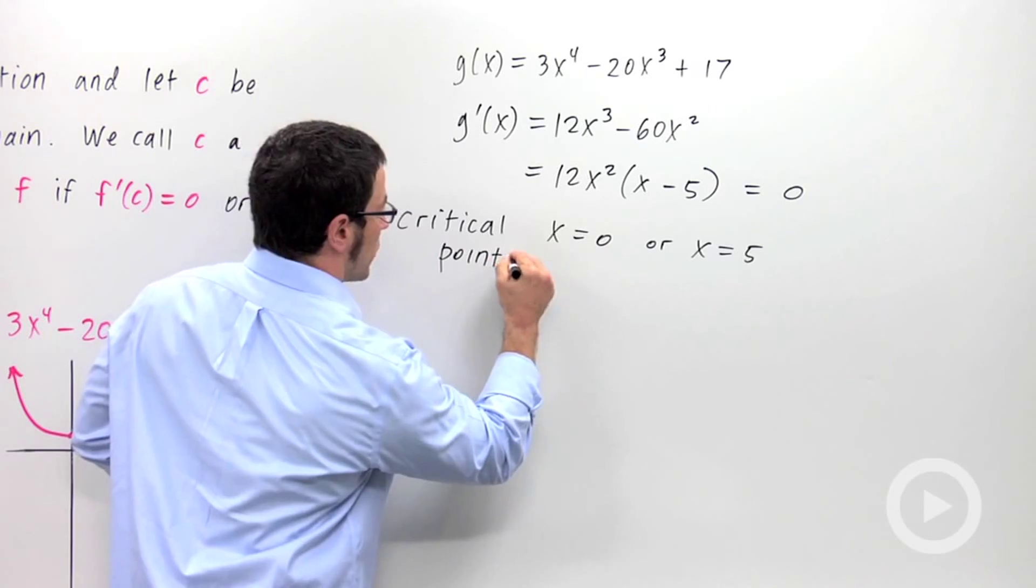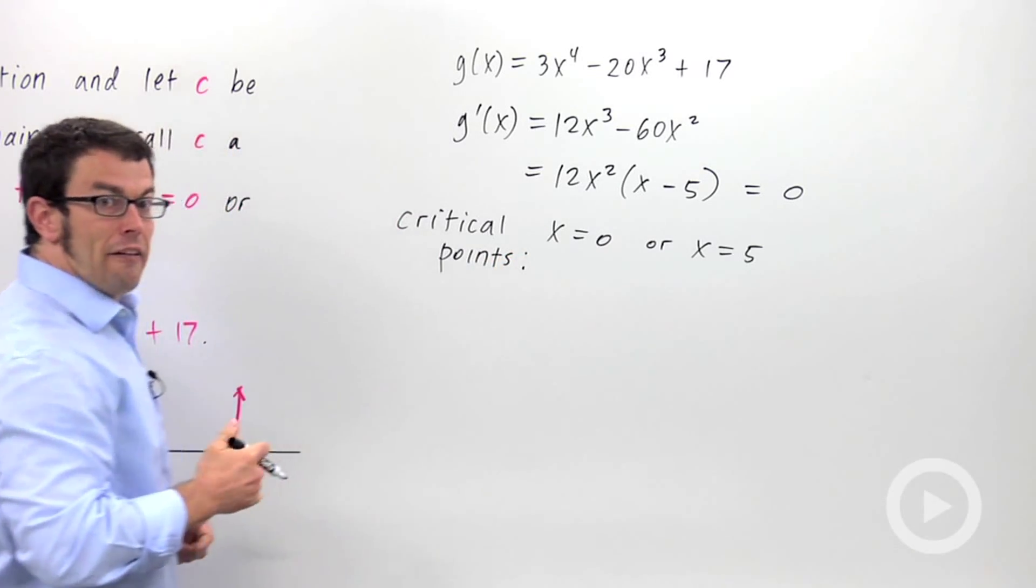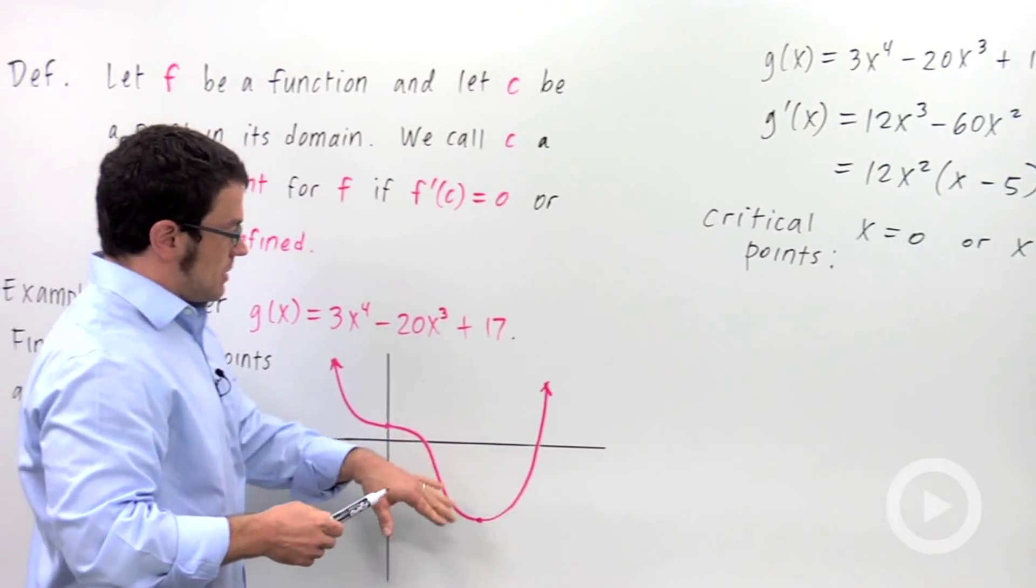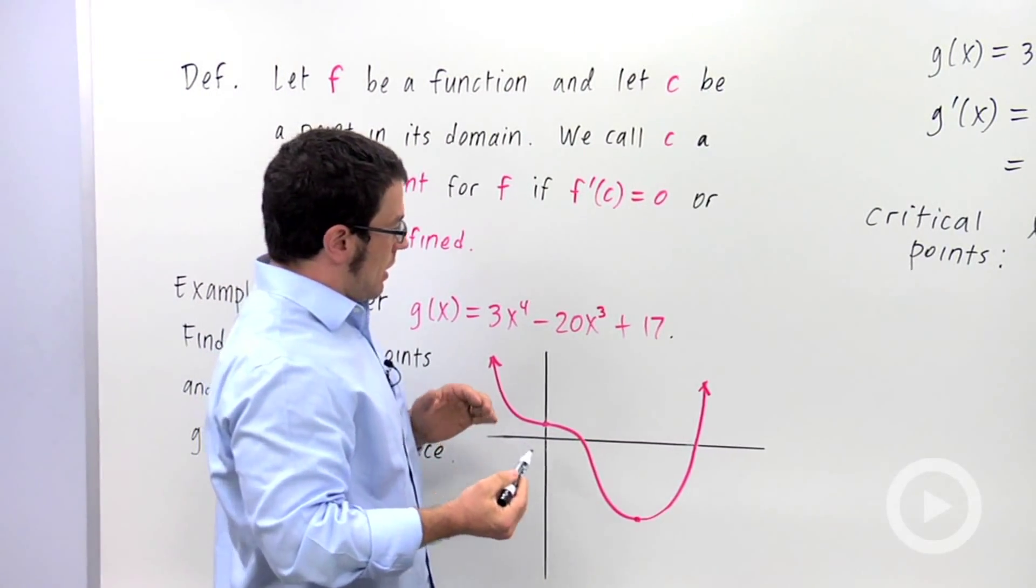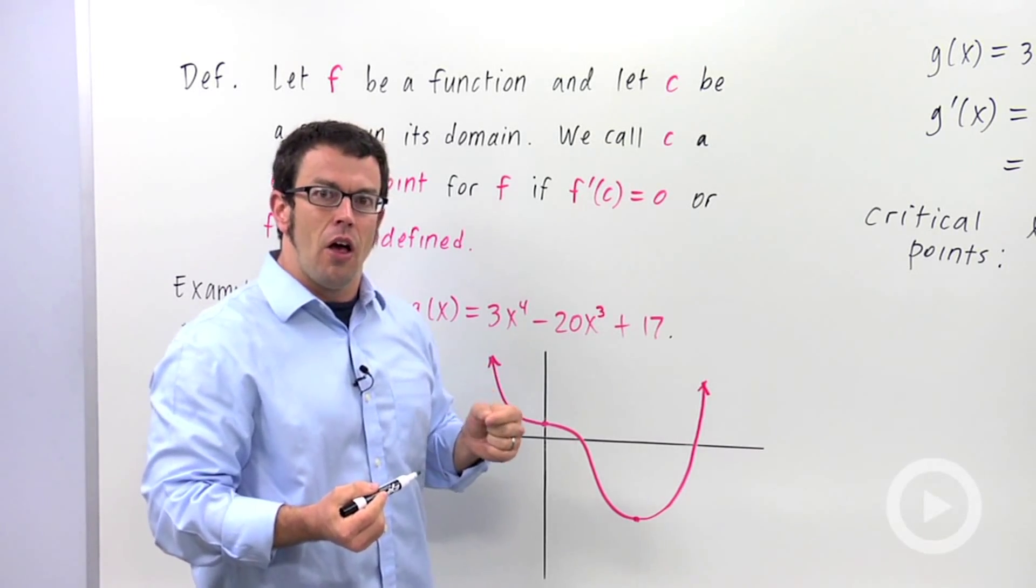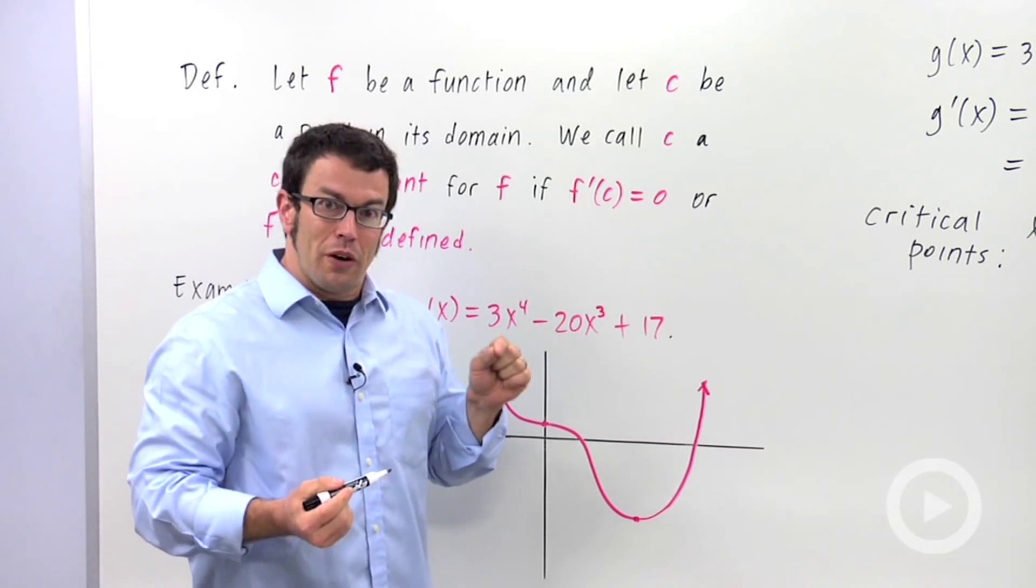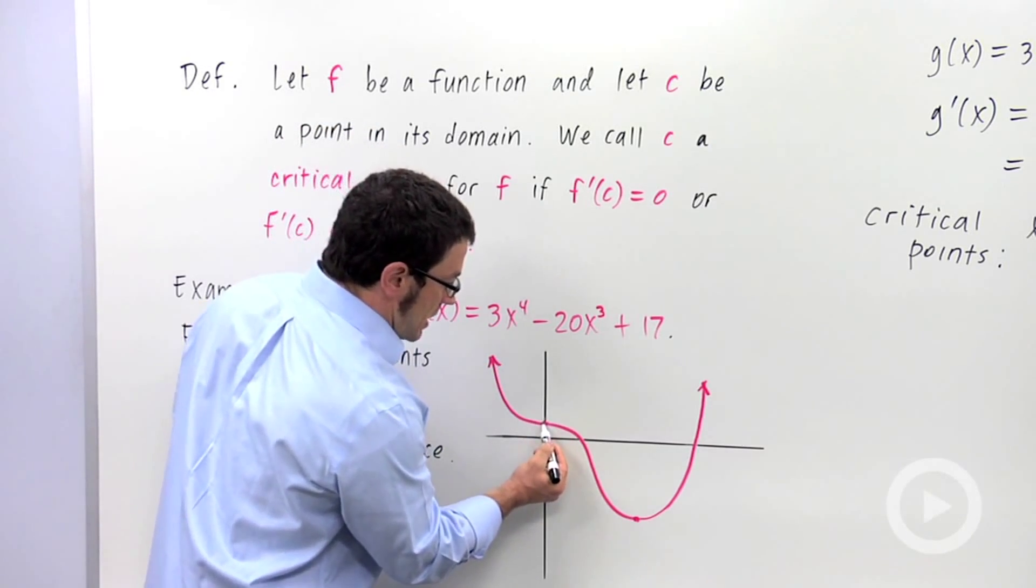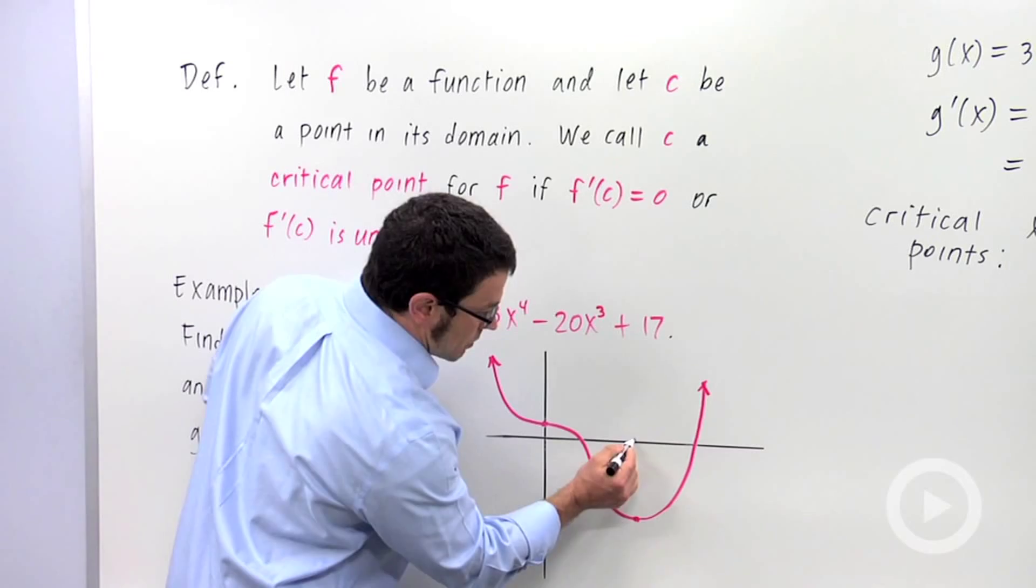Now let me show you what the critical points look like on the graph. So just going back here, I have the graph. I didn't mark any of these points. But since you remember that the derivative gives us the slope of a tangent line, and the critical points are points where the slope of the tangent line is 0, these are the critical points here, x equals 0 and x equals 5.